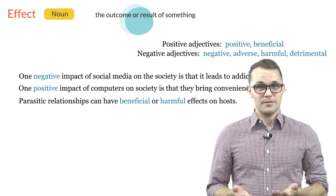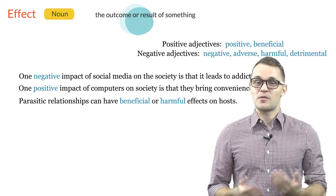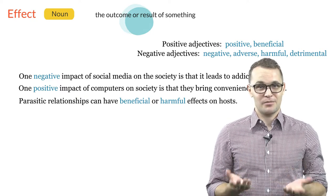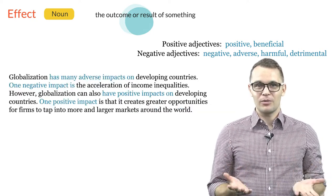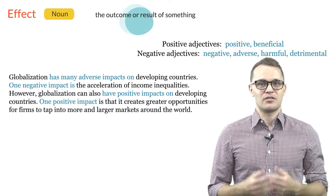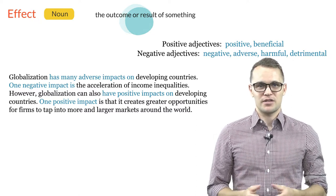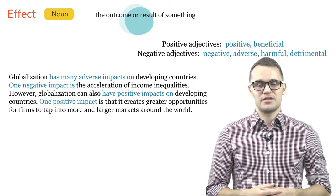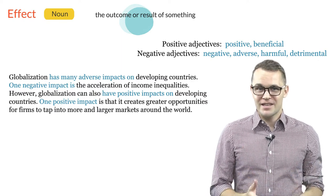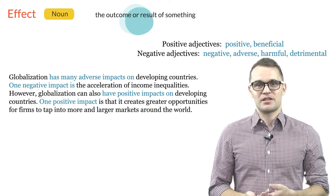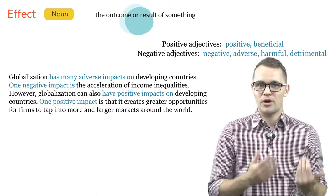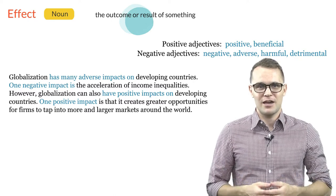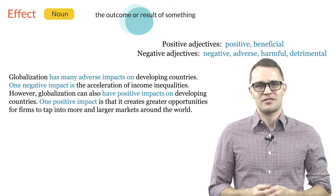We often use the third pattern followed by the second pattern when we write a summary. For example: globalization has many adverse impacts on developing countries. One negative impact is the acceleration of income inequalities. However, globalization can also have positive impacts on developing countries. One positive impact is that it creates greater opportunities for firms to tap into more and larger markets around the world.